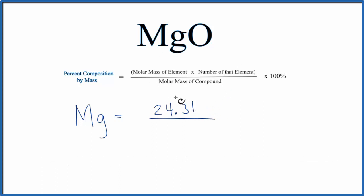We'll divide it by the molar mass for the entire compound. So we add the atomic mass of magnesium and oxygen together and we end up with 40.31 grams per mole. That's the molar mass for MgO. So we'll put that on the bottom.